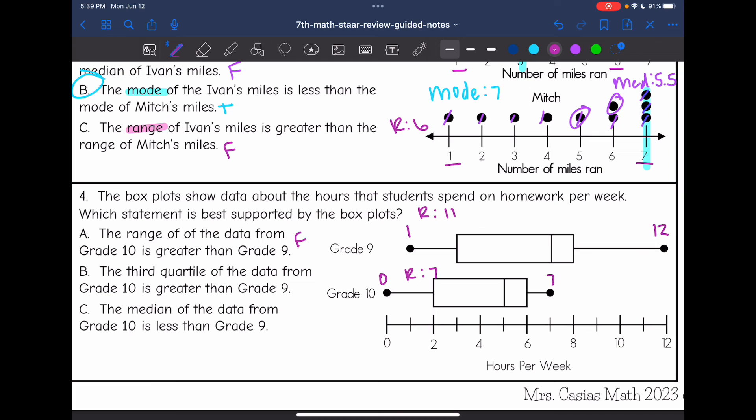B says the third quartile of the data from grade nine is greater than grade, or the third quartile of the data from grade 10 is greater than grade nine. Well, the third quartile for grade nine is at eight. And the third quartile for grade 10 is at six. So the third quartile of the data is greater than grade 10. It's greater than grade nine. That is false. Grade nine was greater.